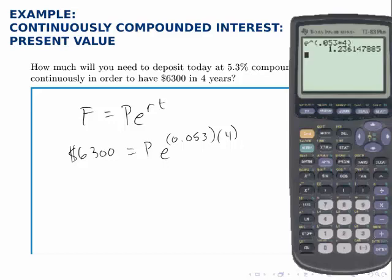And then to solve for P, we divide 6,300 by that answer. So 6,300 divided by, and then I use second and the minus button to pull up the previous answer rather than re-typing it in and rounding it off.